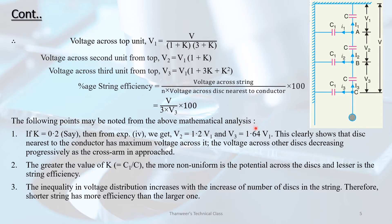The following points may be noted from the above mathematical analysis. If K is equal to 0.2, then V2 is equal to 1.2 V1 and V3 is equal to 1.64 V1. This clearly shows that the disk nearest to the conductor has the maximum voltage across it, and the voltage across other disks decreases progressively as we approach the cross-arm.